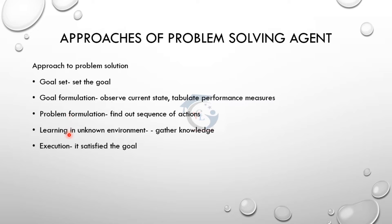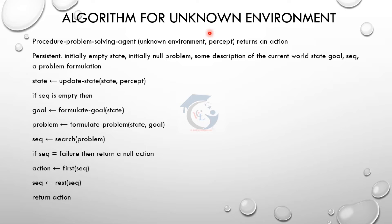Learning in an unknown environment: if we have a known environment, we will choose any solution. If there is an unknown environment, we will gain knowledge about the problem, check the solution, and then execute the solution. In an unknown environment, the problem-solving agent finds the same solution.